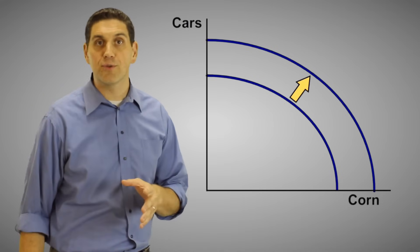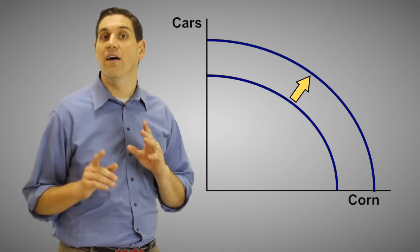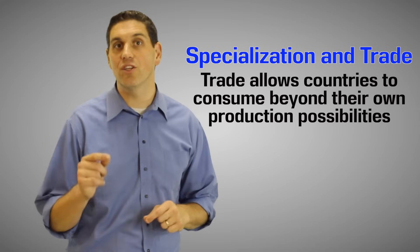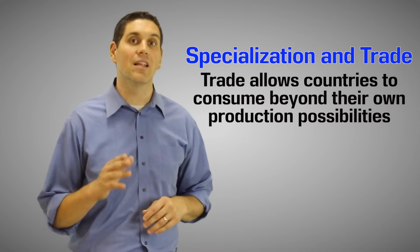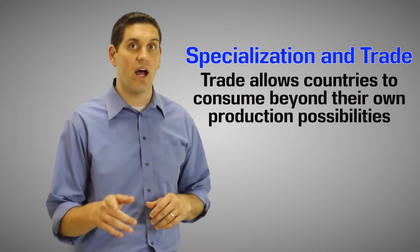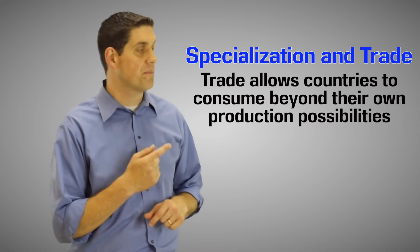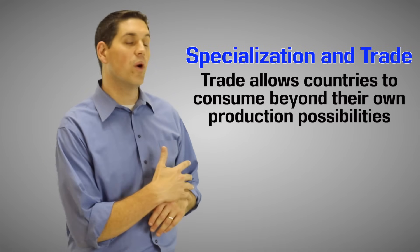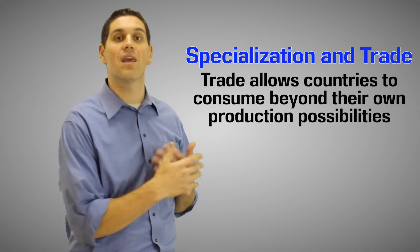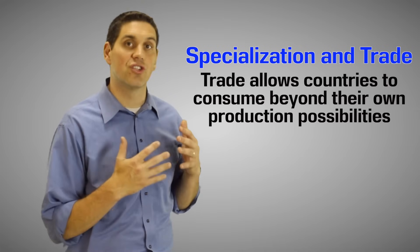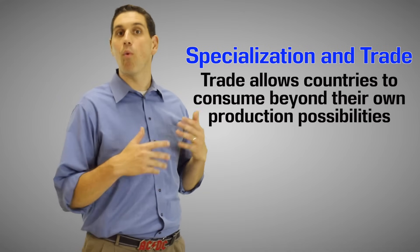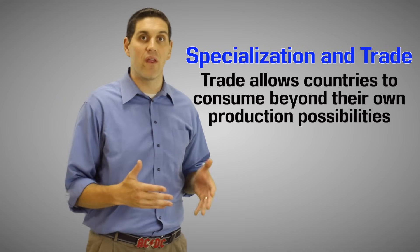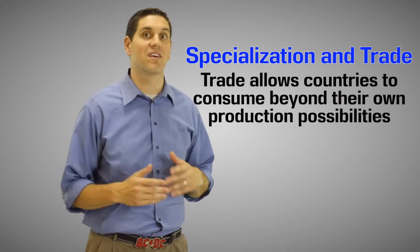There's one more option that can shift the curve, which is the idea of trade. When countries specialize and trade, they can get other products at a lower opportunity cost than if they produce it themselves. That means the production possibilities curve would shift out in the amount that they can consume. It doesn't mean that they can produce more than they could before, but they can get more than before because of trade.